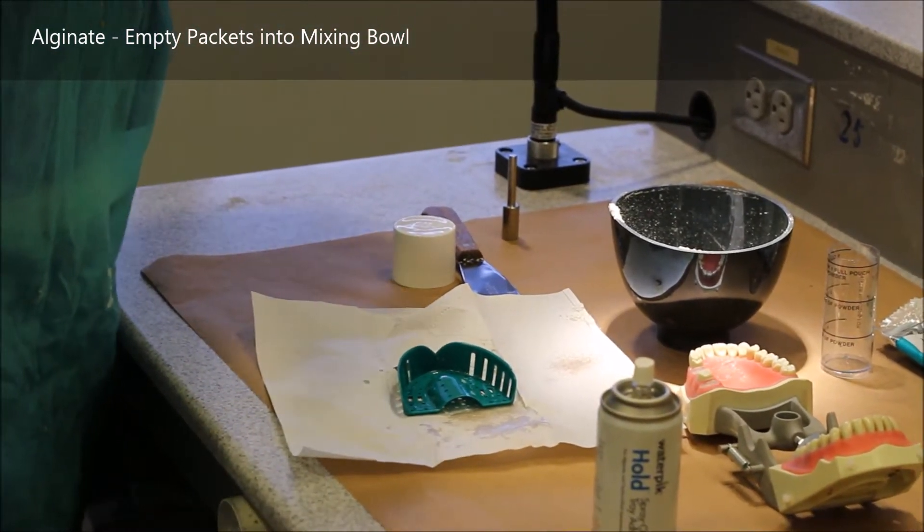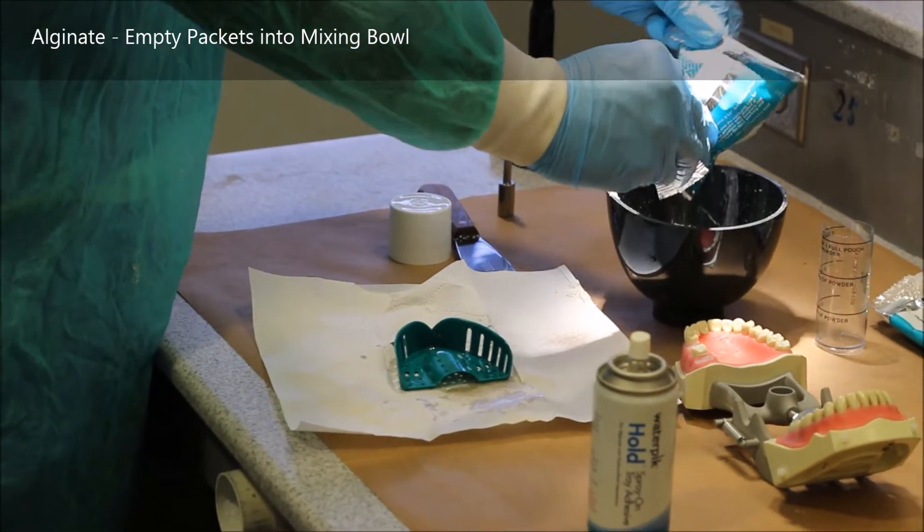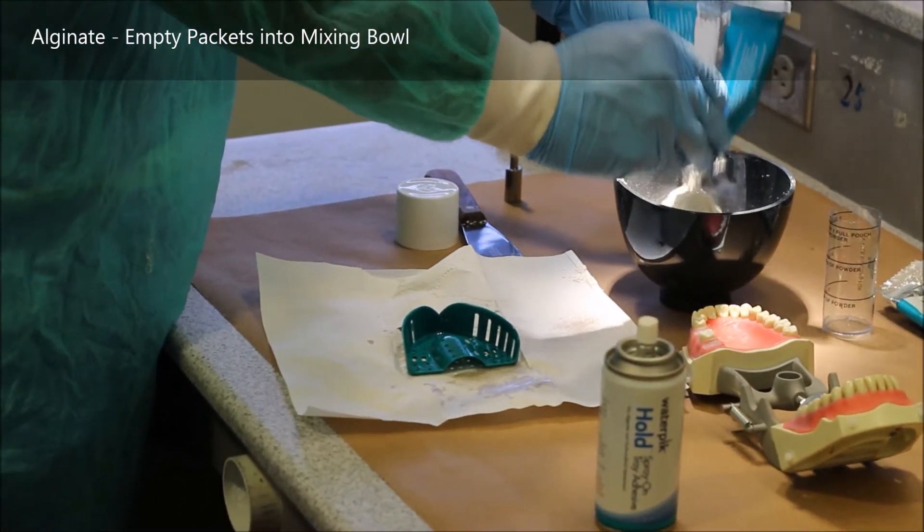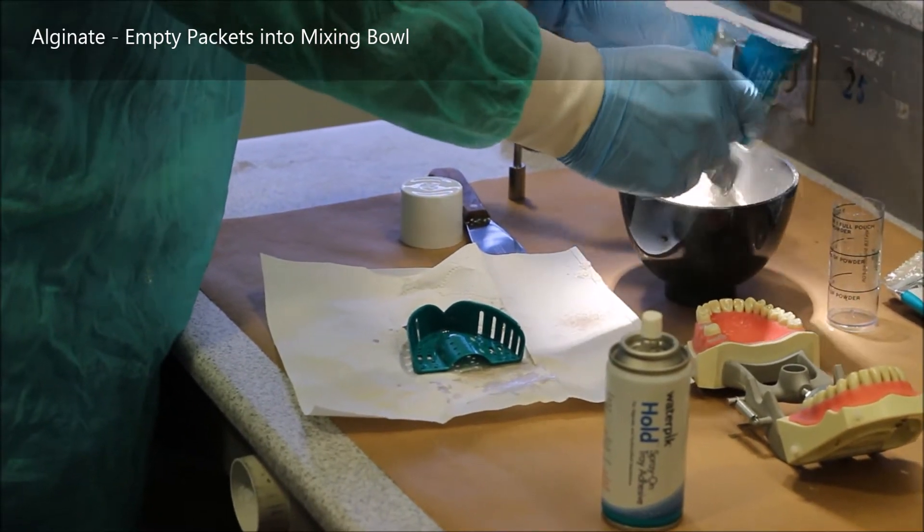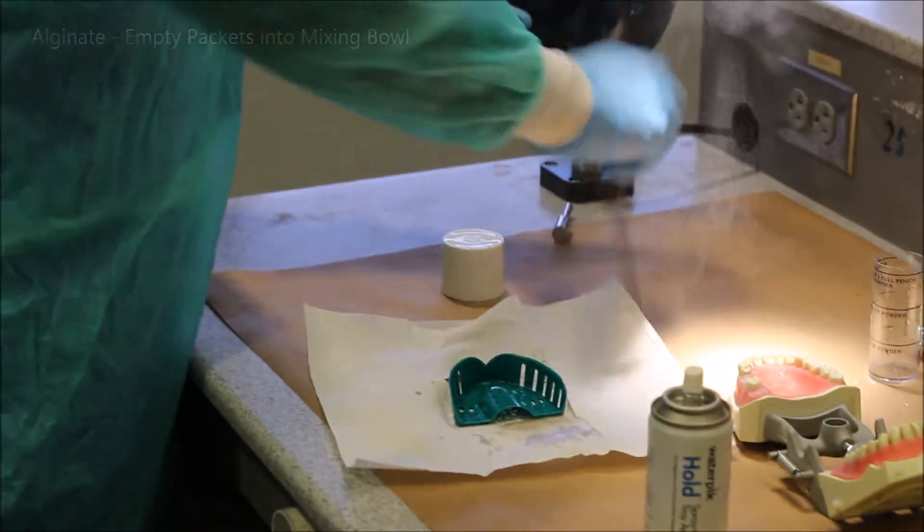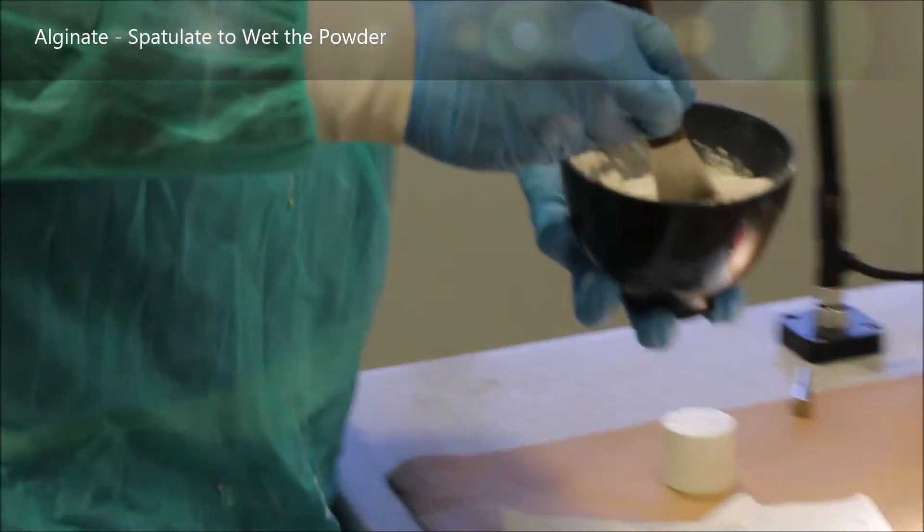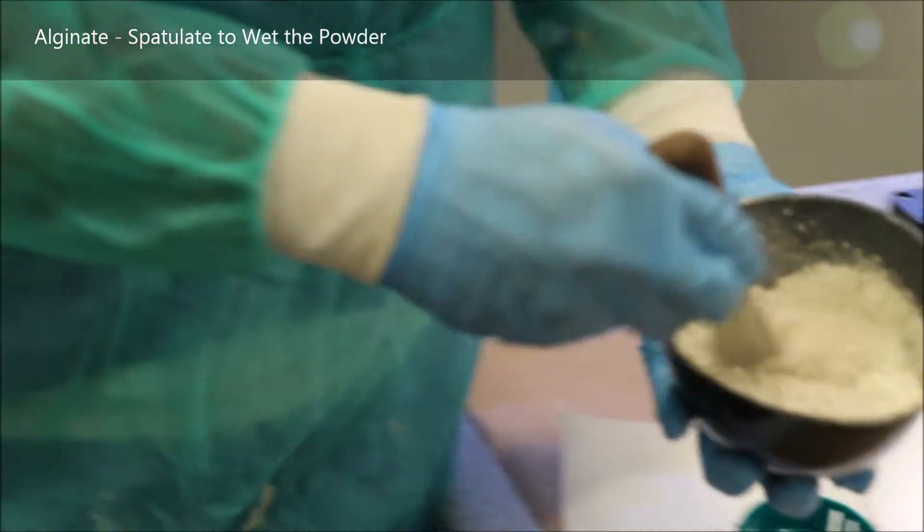The reason I'm using two here is because I'm trying to capture the typodont as clearly as possible. In this case, I'm trying to get all of the occlusal surfaces and all the teeth as well as the pink gingiva of the typodont all the way to its ends.